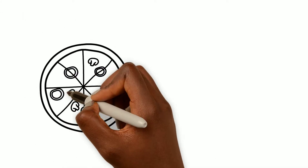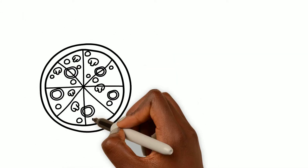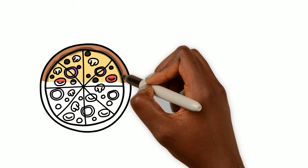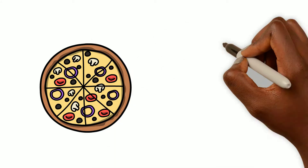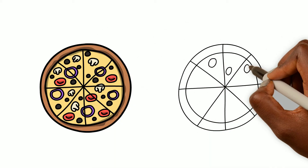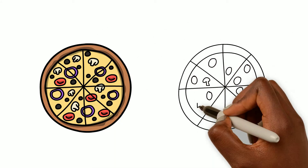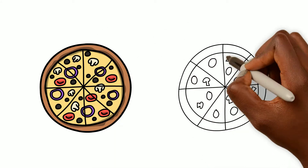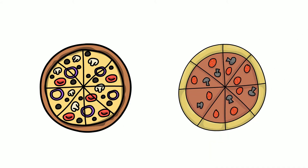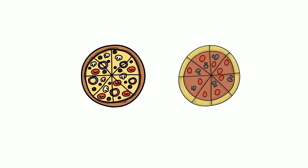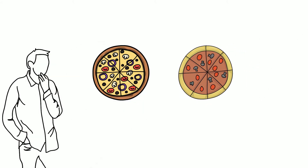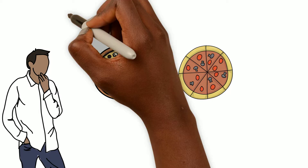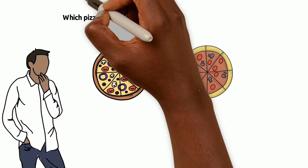For example, at lunch you have the choice of cheese or sausage pizza. How do you decide which one to choose? Well, first, you're going to define the problem: you need to choose which variety of pizza to have for lunch.